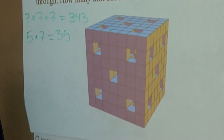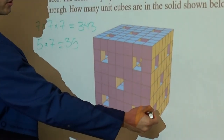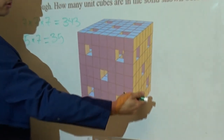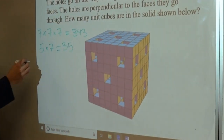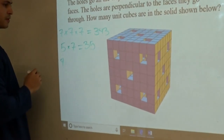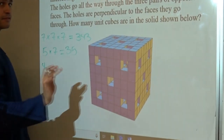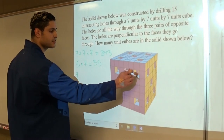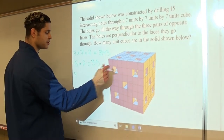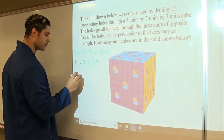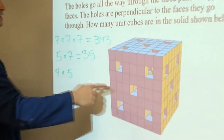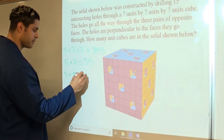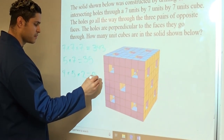In phase two and phase three, when we drill the holes on the bottom and the top — these four right here — we drill only five unit cubes each. Why? Because it intercepts here and also intercepts here. So that would be four times five, and this happens in phase two and phase three, so multiplied by two. That equals 40.